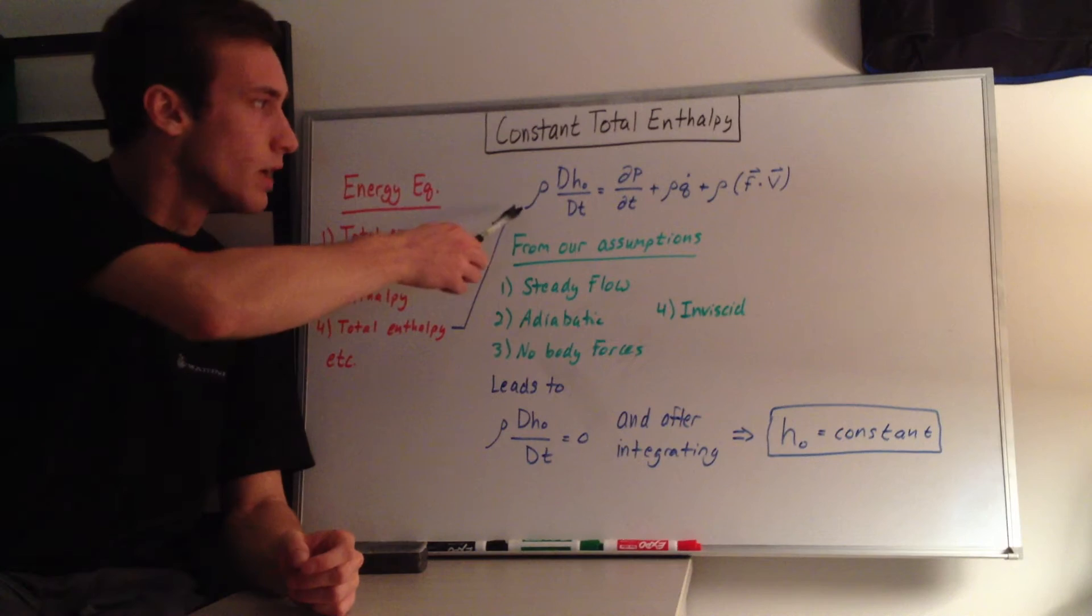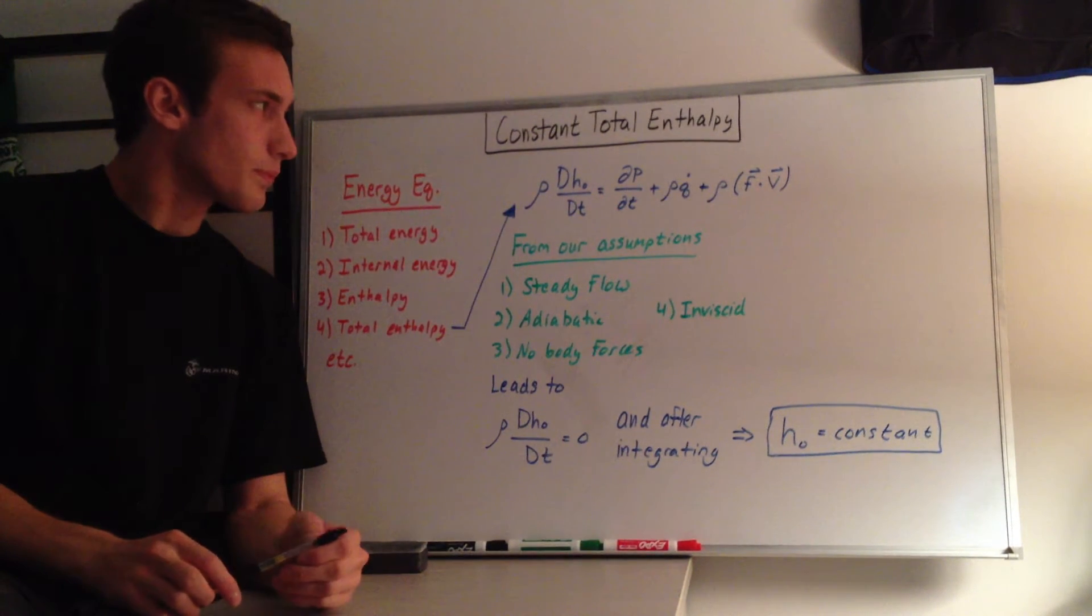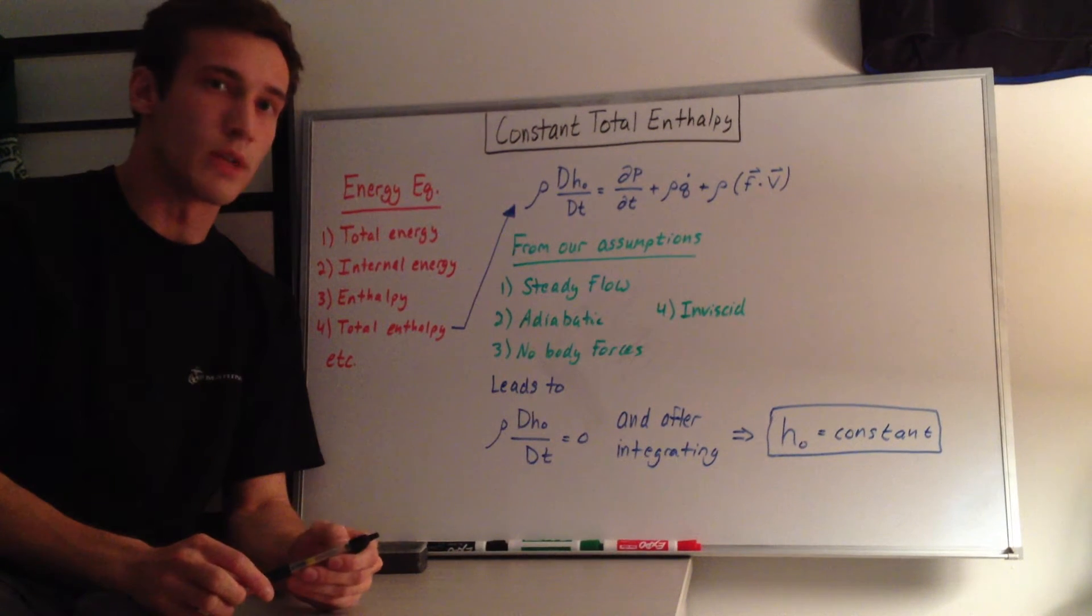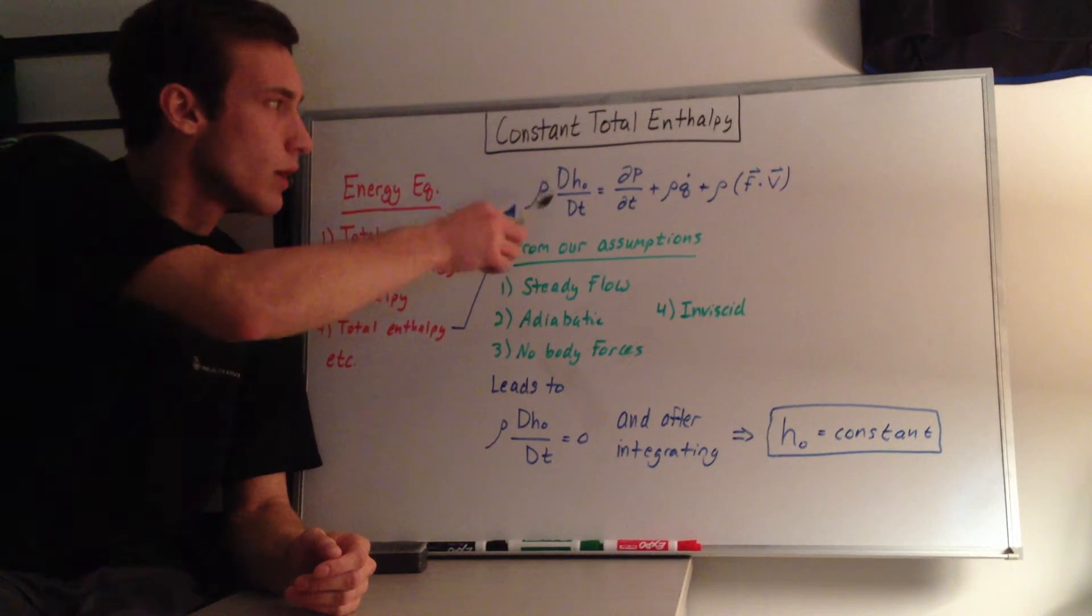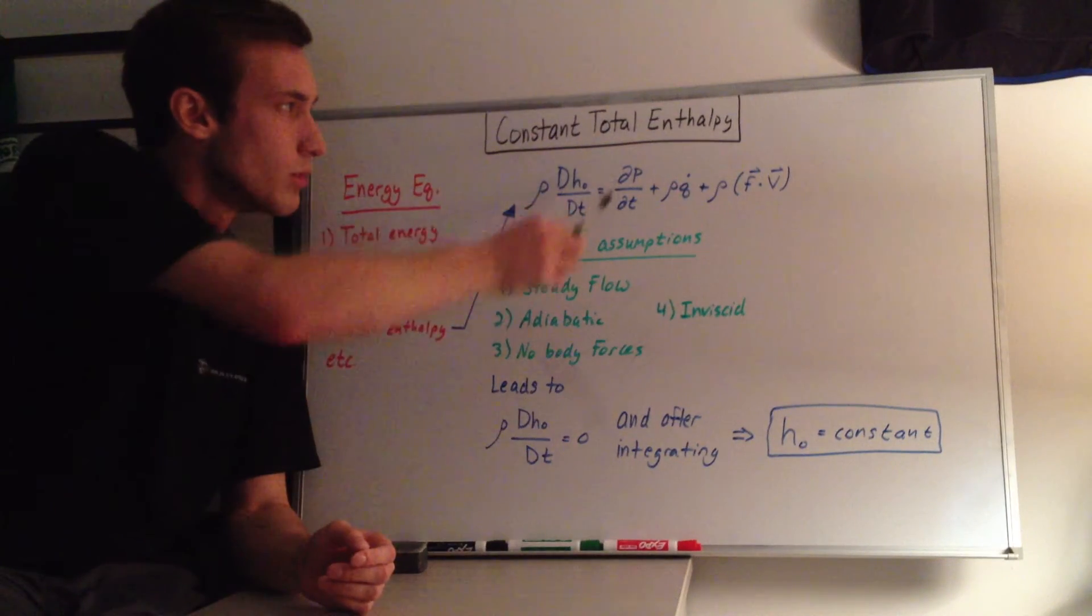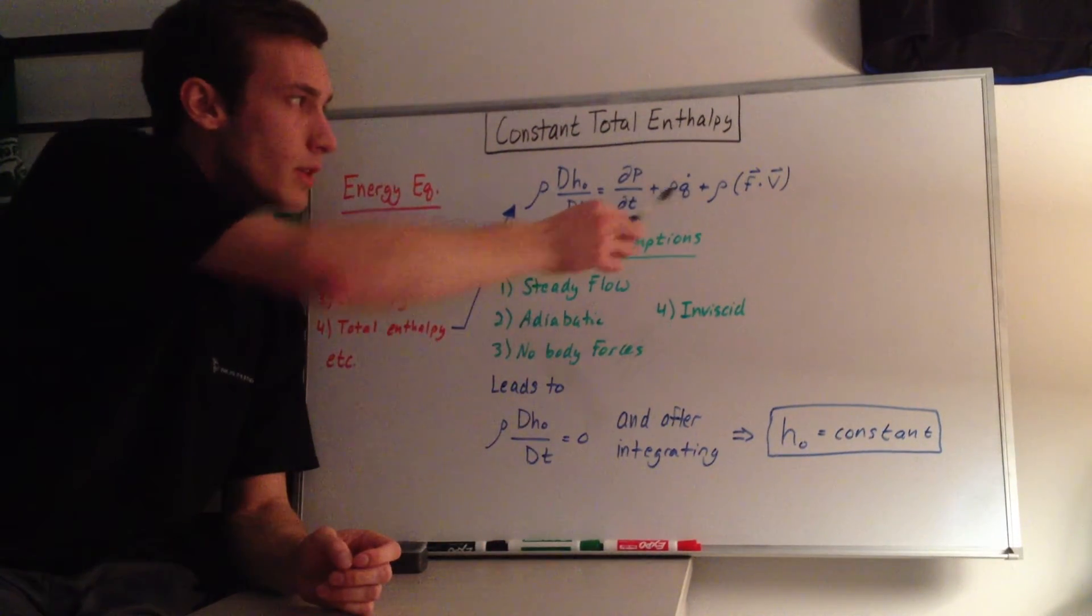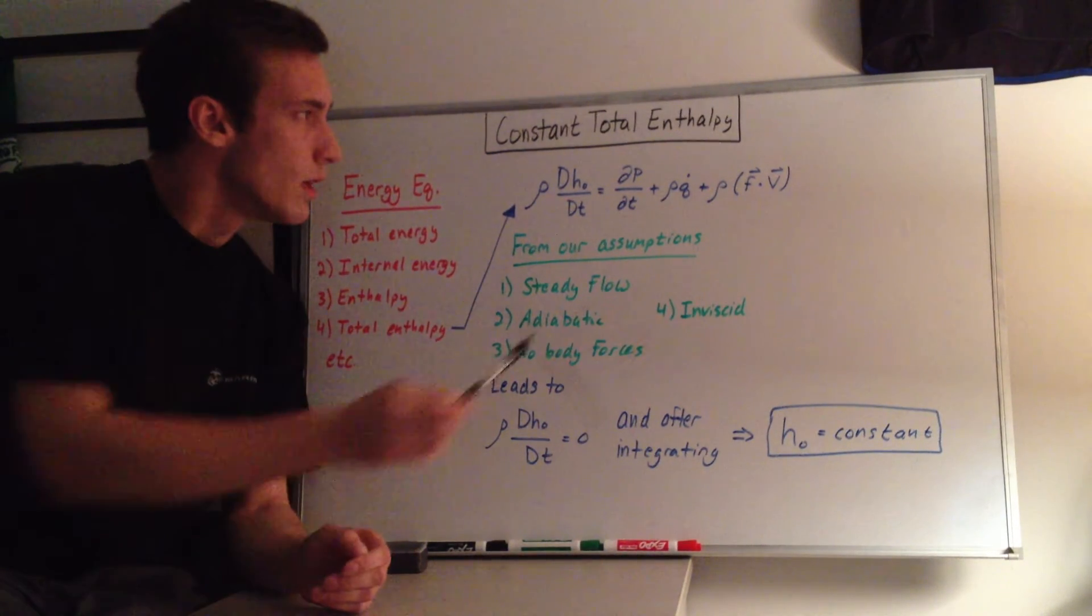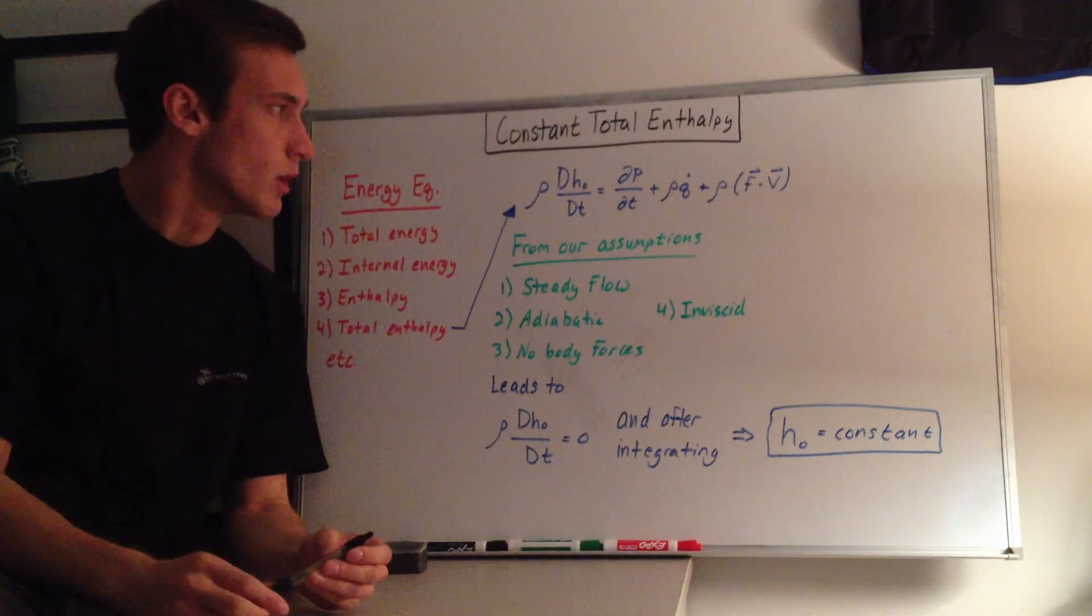So, this is the energy equation right here without any frictional or viscous effects in the equation right now. It's rho and the substantial or total derivative of the enthalpy is equal to the change in pressure with the change in time plus the density times the rate of heat added and then plus the density times the body force term.